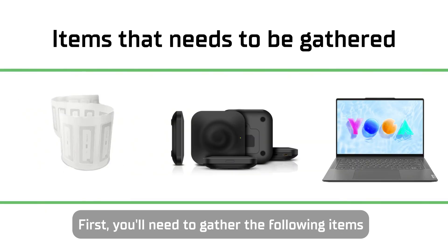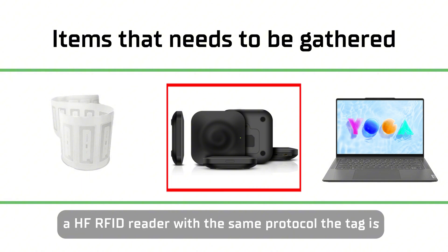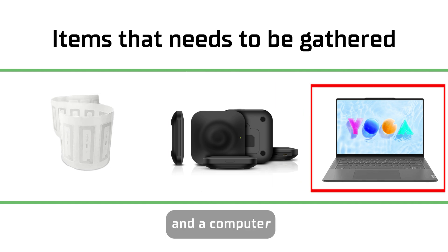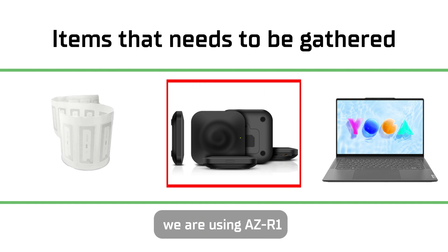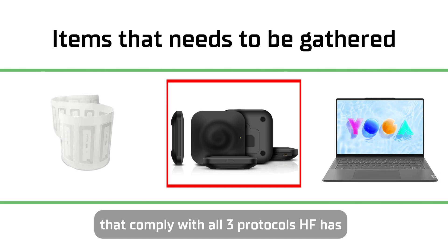First, you'll need to gather the following items: the HF RFID tags that you're going to encode, an HF RFID reader with the same protocol as the tag, and a computer. In this video, we are using the AZR1, an HF and UHF dual-band reader that complies with all three protocols HF has.